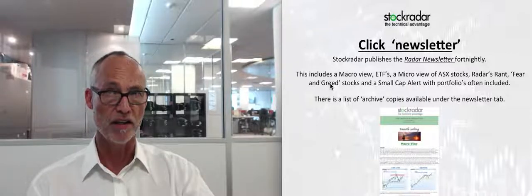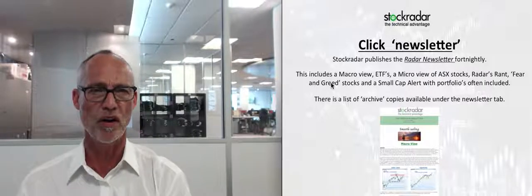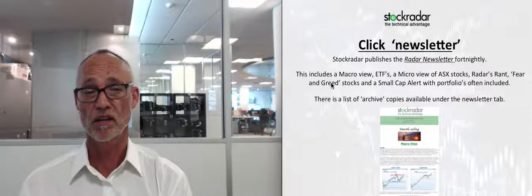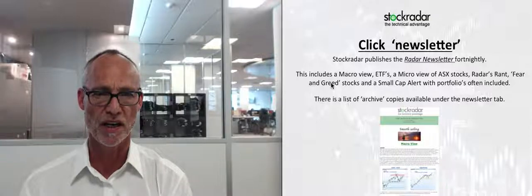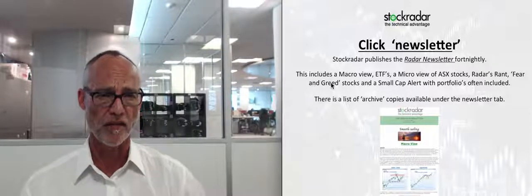Moving to the Newsletter section — I publish the Radar Newsletter every fortnight. It includes a macro view, ETFs, a micro view of ASX stocks, my rants on anything I feel needs discussing, and a fear-and-greed stocks section. There's a small portfolio at the end looking at stocks that are very overbought or very oversold, giving people an idea of what to potentially buy for a longer-term portfolio. There's also an occasional small cap alert and a full archive of past newsletters available under the newsletter tab.